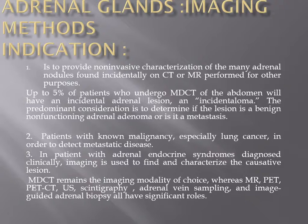First, it is important to characterize the incidentally found adrenal mass — to detect whether it is malignant or a benign non-functioning adenoma. About 5% of patients who undergo multi-detector CT scan of the abdomen for another cause will have an incidental adrenal mass discovered. Second, in patients with known malignancy, especially lung cancer, to detect metastatic disease. Third, in patients with adrenal endocrine syndrome diagnosed clinically, to detect whether it is due to adrenal hyperplasia or adenoma, as the treatments are completely different.